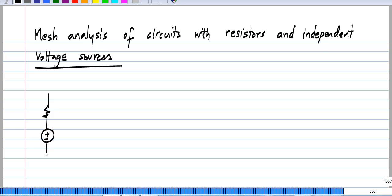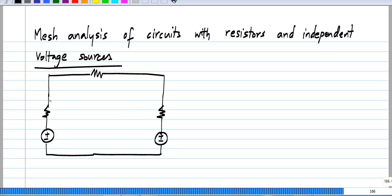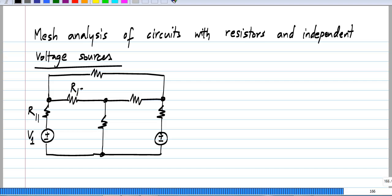Let me take a particular circuit. Let me label these V1, R11, R13, R12, R23, R22, R33, and V2. You can clearly see that there are three meshes — one is here, another is there, and another is over there.